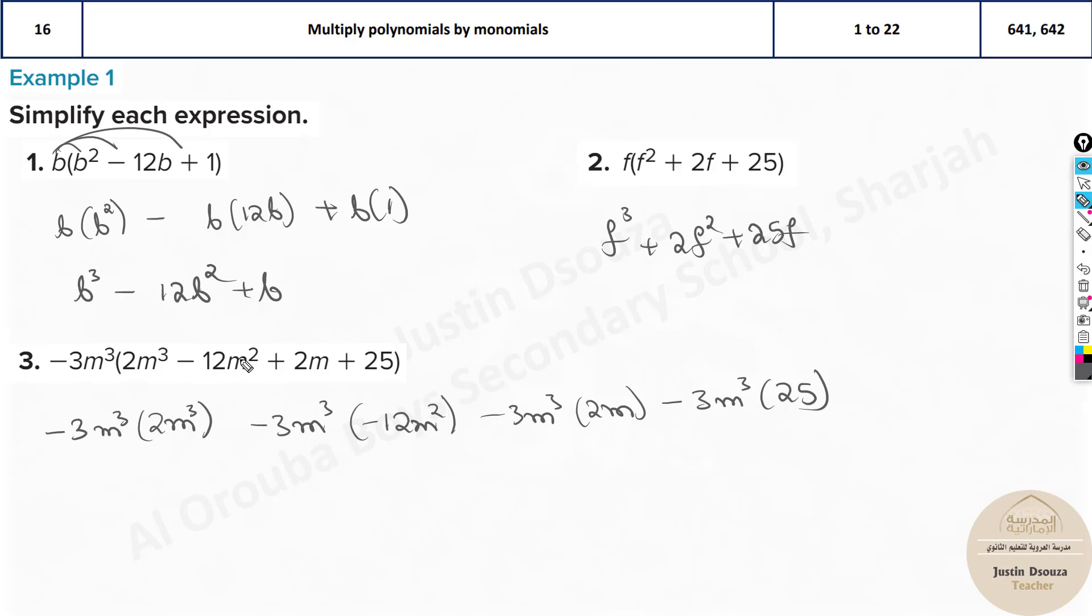Because it was minus only for this term, all the others are just plus. Now minus remains, 3 times 2 is 6, M cubed times M cubed. The powers add up, it will be M power 6. Whenever we have M cubed multiplied by M cubed, the base is the same, add the powers up. It will be M to the power 6. Whereas if it was M cubed the whole power 3, the powers are powered up. It will be 3 multiplied by 3, that is M to the power 9.